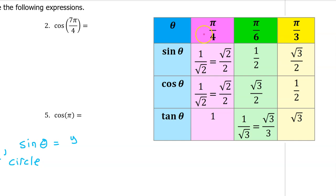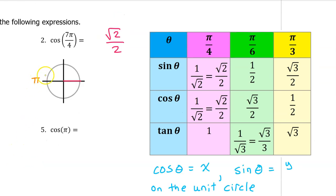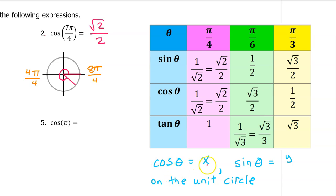7 pi over 4 is a multiple of pi over 4, so the cosine of 7 pi over 4 will be the same as the cosine of pi over 4, which is radical 2 over 2 — except it might be negative depending on the quadrant. We can think of pi as 4 pi over 4 and 2 pi as 8 pi over 4. Therefore, 7 pi over 4 is one multiple before 8 pi over 4, putting it in the fourth quadrant. Cosine is the x value, and x values are positive in the fourth quadrant, so the answer is positive radical 2 over 2.